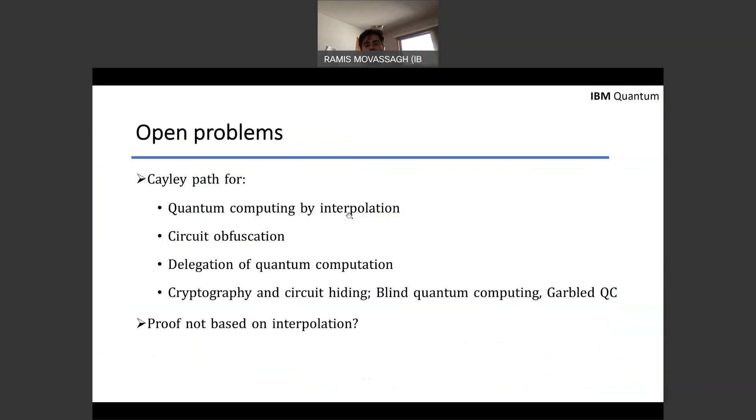So some open problems are: can you use Cayley path for quantum computing by interpolation? Maybe other things like circuit obfuscation, because it gives you a way to relate a known circuit to some randomized circuit. Maybe one can study the power of quantum computers as a function of architecture, delegation of quantum computation. For other cryptographic protocols, circuit hiding, blind quantum computing, or garbage quantum circuits. Can one find proofs that are not based on interpolation using Lipton's ideas?